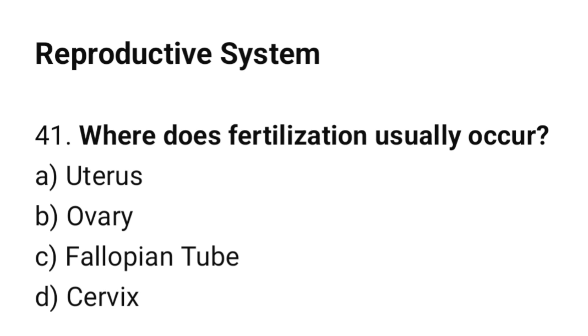Question number 41: Where does fertilization usually occur? The correct answer is C: Fallopian tube.